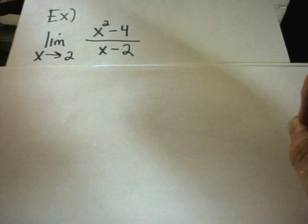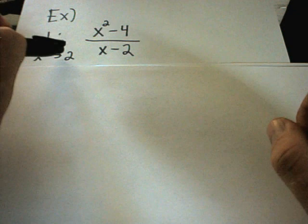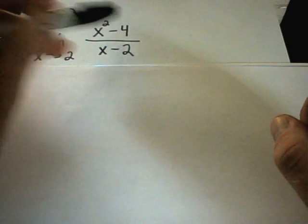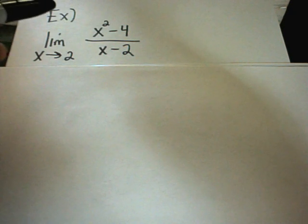So for our first limit problem, we're going to look at the limit as x approaches 2 of x squared minus 4 over x minus 2.